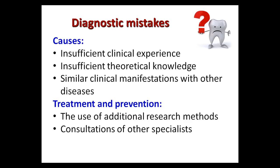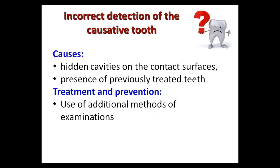The first group is diagnostic mistakes. Causes include insufficient clinical experience, insufficient theoretical knowledge, or similar clinical manifestations shared with other diseases. Prevention involves the use of additional research methods and consultations with other specialists. Incorrect detection of the causative tooth is also a diagnostic mistake, caused by hidden cavities on contact surfaces or previously treated teeth. Prevention includes additional examination methods such as X-ray or electroodontodiagnosis.